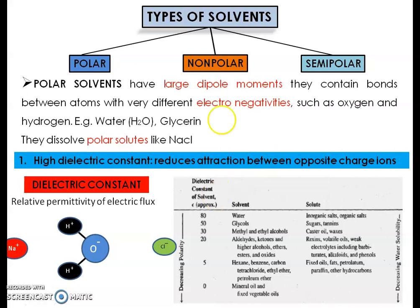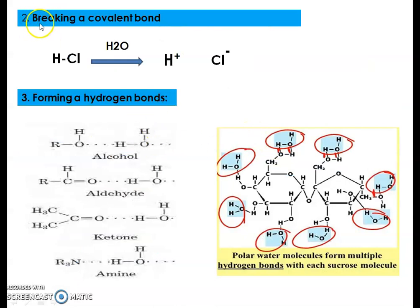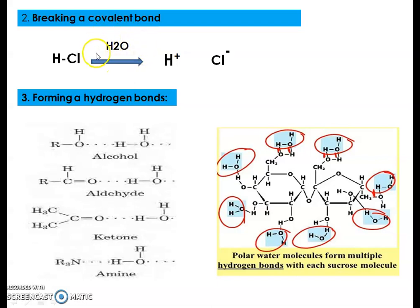The second mechanism by which polar solvents cause solubilization is the breaking of covalent bonds. For example, when hydrochloric acid (HCl) is added to water, the covalent bond of HCl — which is normally difficult to break — readily dissociates into H⁺ and Cl⁻. This is due to the electronegativities of water as a polar solvent: water has O⁻ and H⁺ electronegativities and high dipole moments, which break the covalent bond of hydrochloric acid and dissociate it into H⁺ and Cl⁻.